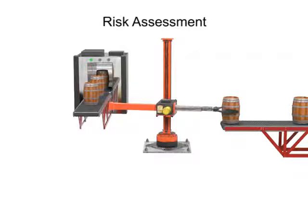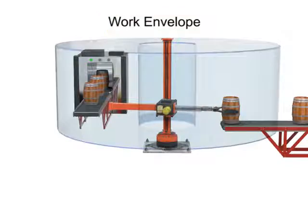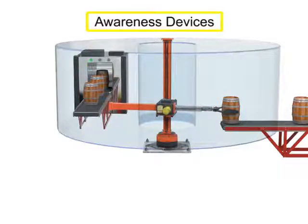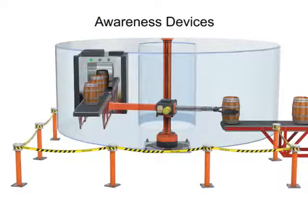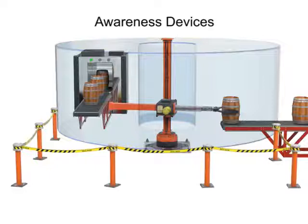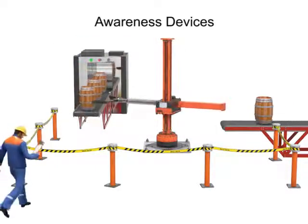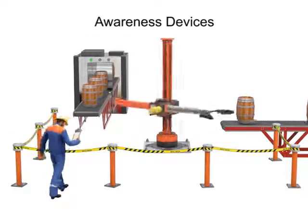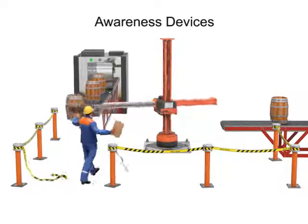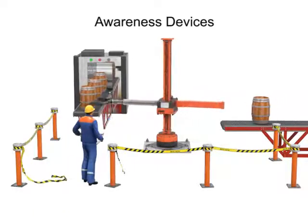Several methods can be used to protect the work envelope. The simplest are known as awareness devices. These devices are only intended to define the work envelope and make personnel aware of the hazards.